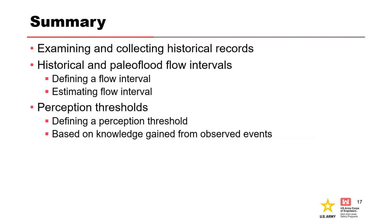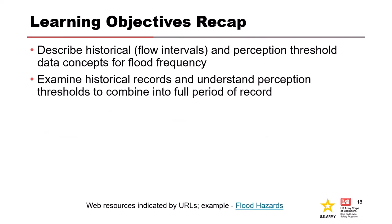In summary, we learned more on collecting and examining data from various sources to find historical records of observed events. This process can take time and digging deep to find usable information that can lengthen our period of record. You should now be able to clearly define what a flow interval is and know how to add it into your flow frequency analysis, as well as define a perception threshold and interpret historical records to define perception thresholds for periods of record with missing data. Remember that different levels of study require appropriate effort for both research and estimating historical flow values with uncertainty.